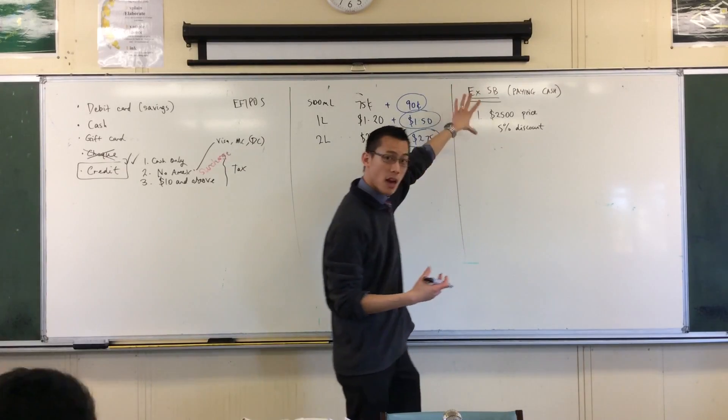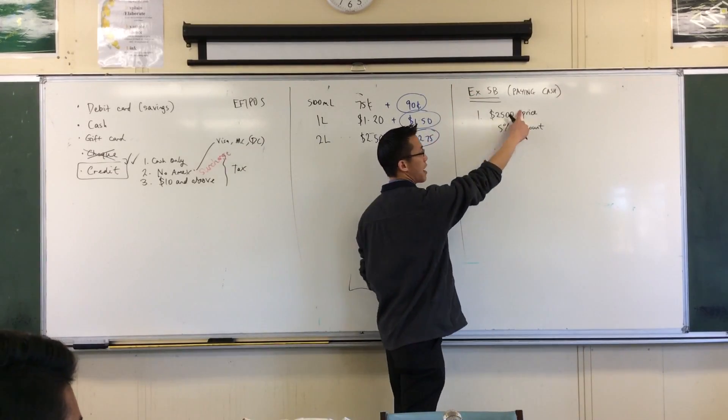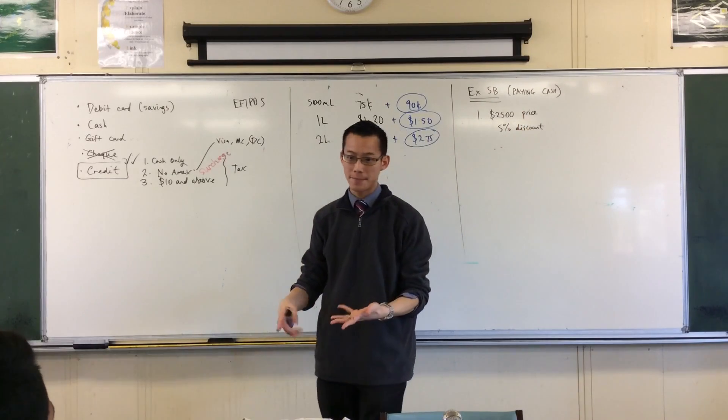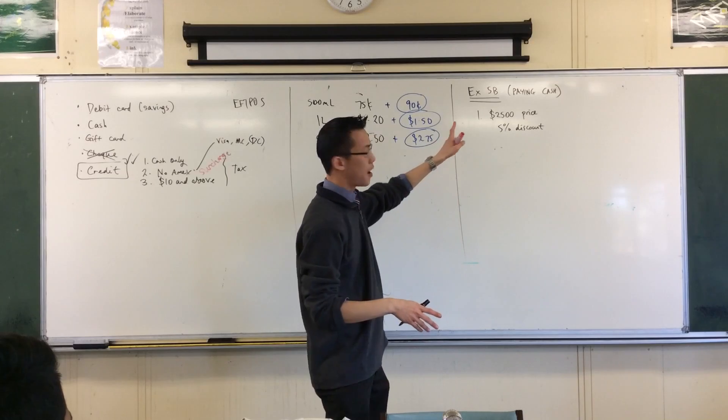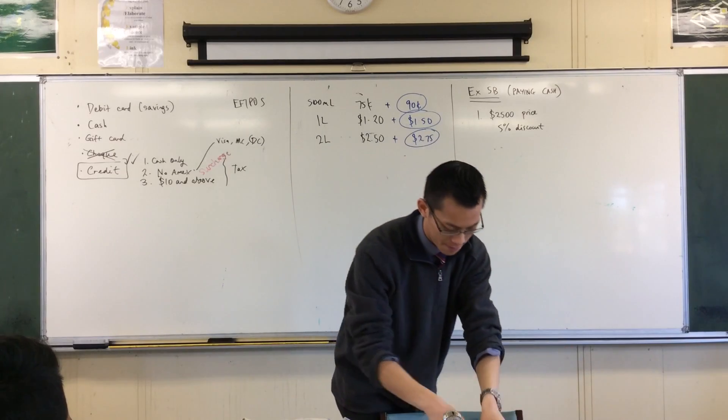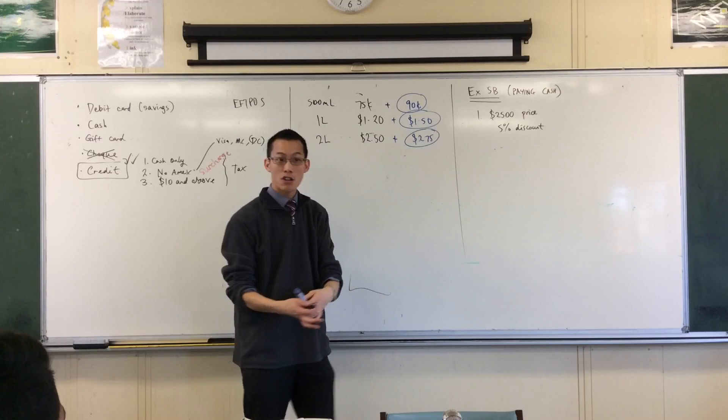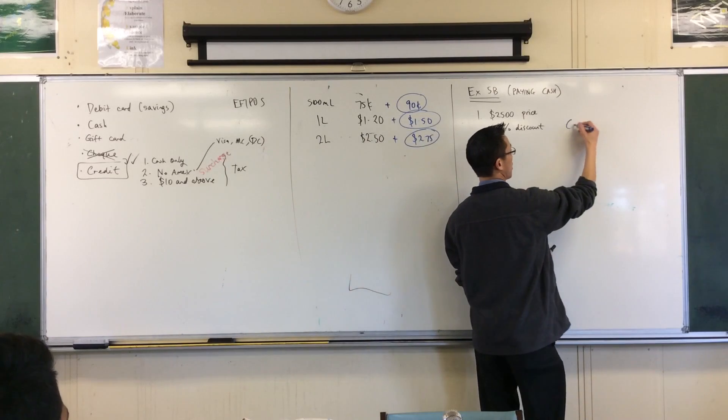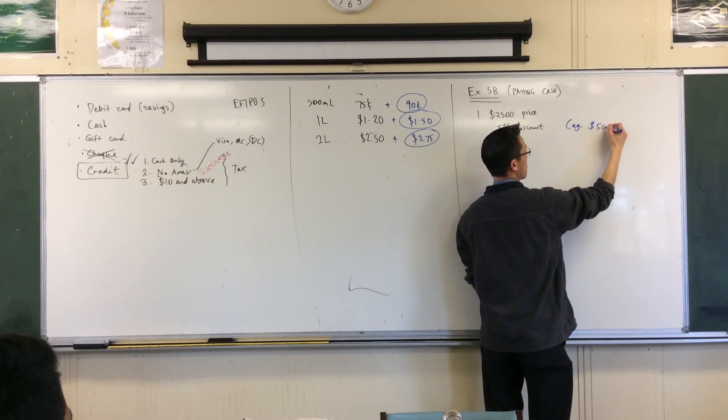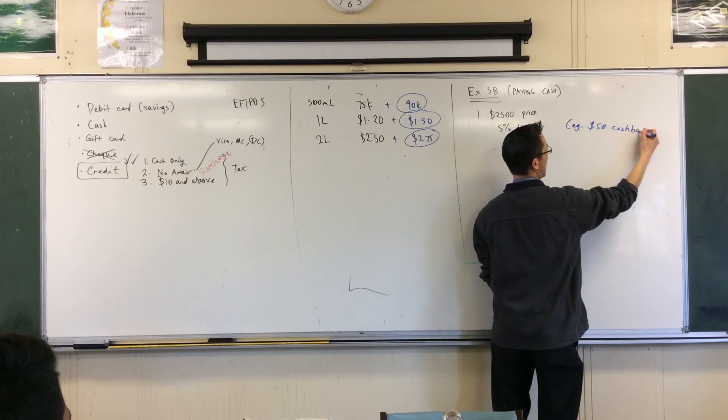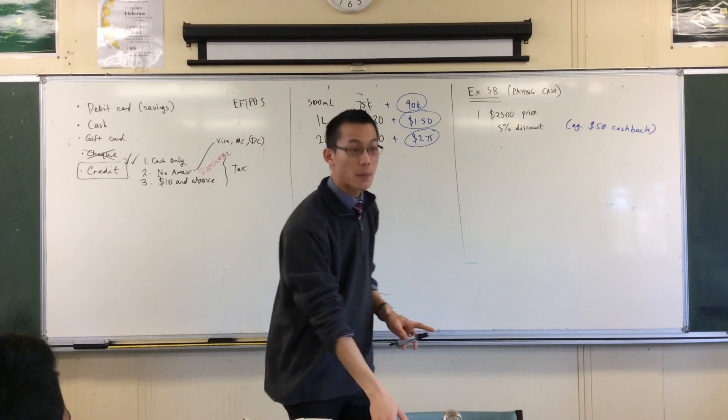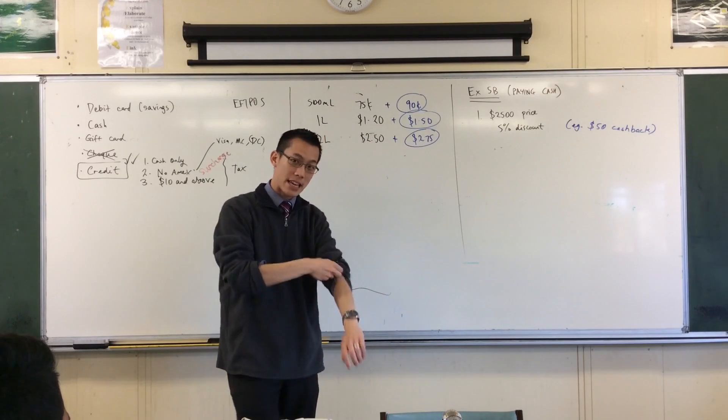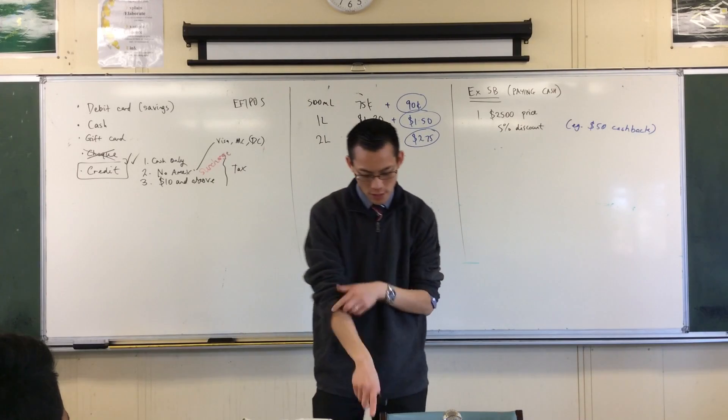So you'll see this scenario all the time. Some price, some agreed-upon discount. Sometimes the discount is not a percentage. What alternative might you get? It might just be cashback. Like, I'll just give you $50 cashback. This is just an example. In fact, you'll see ads that say this all the time. So it'll either be a flat amount, or it'll be some kind of percentage. You need to pay attention to the question and have a think about what they're asking.